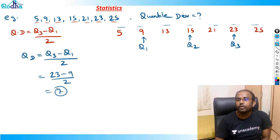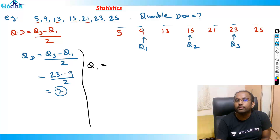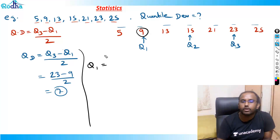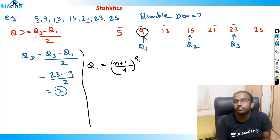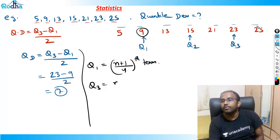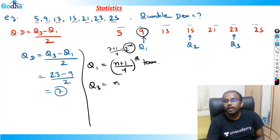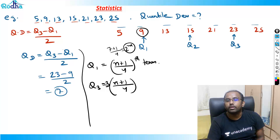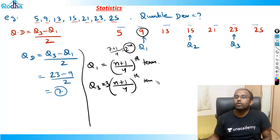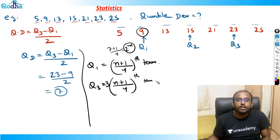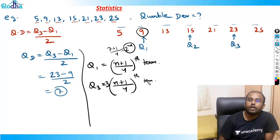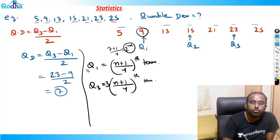To generalize: for n terms, Q1 is the (n+1)/4 th term and Q3 is the 3(n+1)/4 th term. This formula is useful for calculating quartiles in any dataset. Let's also take an example where n is not a multiple giving a whole number.